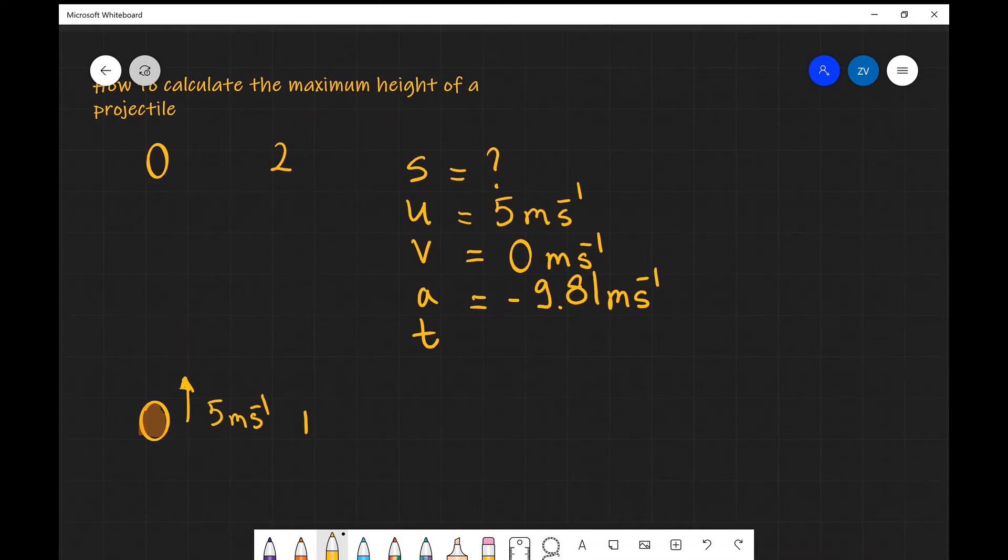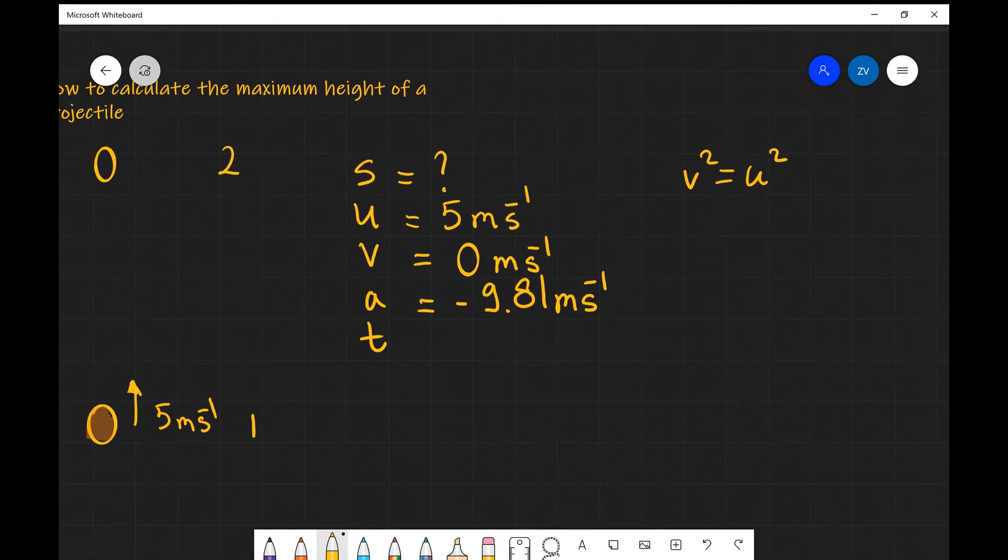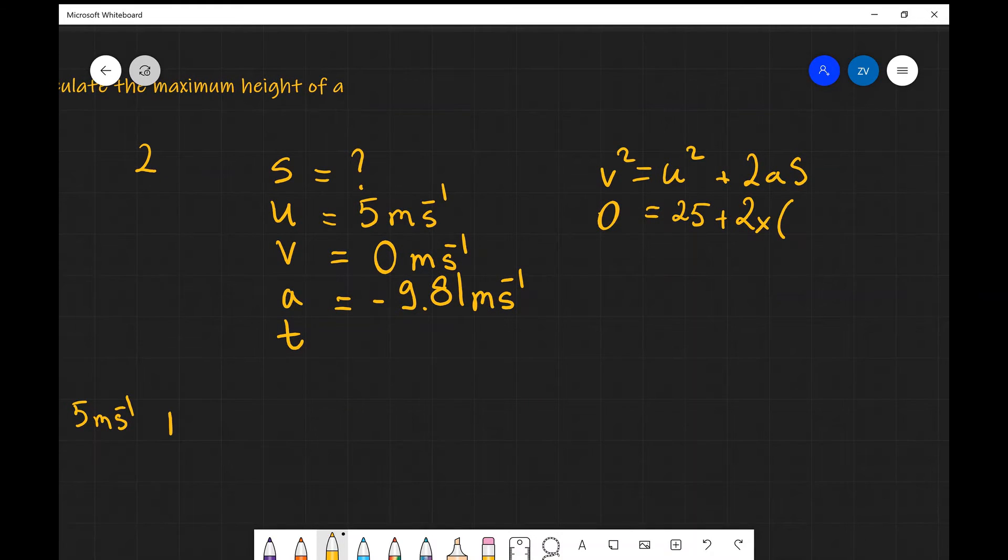Now if you look into the formula sheet, you're going to find that the equation V² = U² + 2aS will definitely fit the bill for solving this problem, so let's start substituting some numbers. We know that the final speed is 0, we know that U squared, which is the initial speed, is 5, so 5 squared, that's 25, plus 2 times the acceleration. Now we are going against gravity really, so it's going to be minus 9.81 times S.